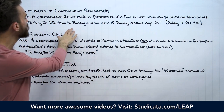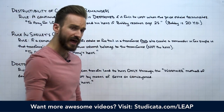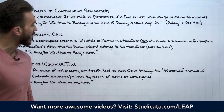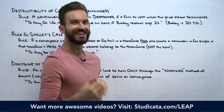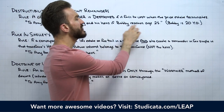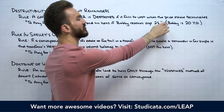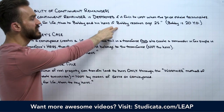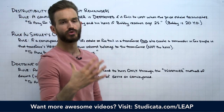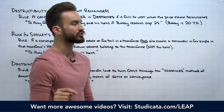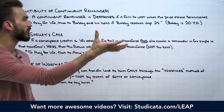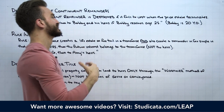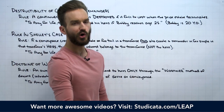Under the destructibility of contingent remainders, this is a common law doctrine that's been largely abolished today, but if we're applying the common law on a real property fact pattern, we'll want to be familiar with this concept. A contingent remainder is destroyed if it fails to vest when the prior estate terminates. Here's an example: if I convey Greenacre to Amy for life, then to Bobby and his heirs if Bobby reaches age 25 — the call of the question asks what interest Bobby holds.